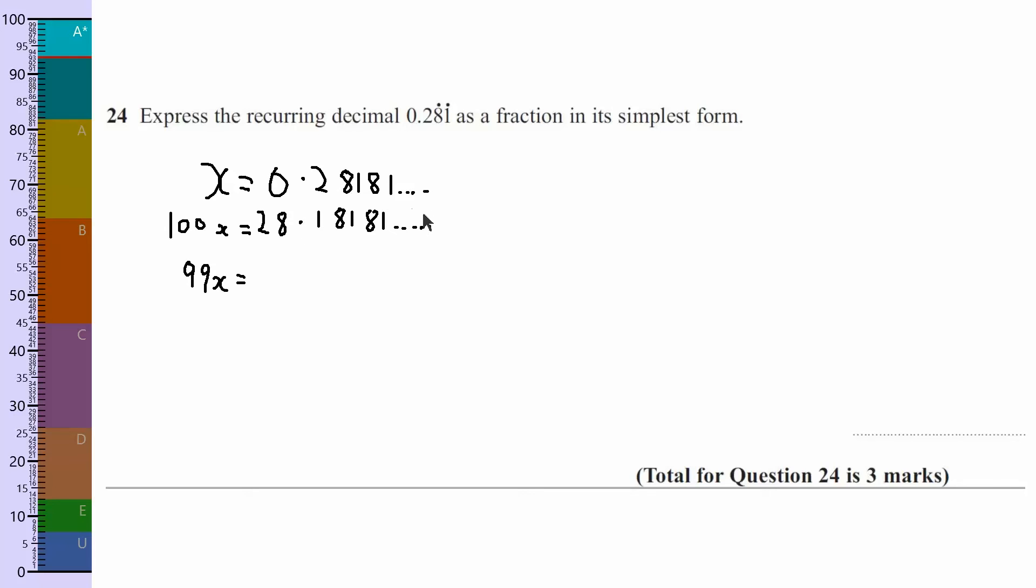So we're doing 28.1, and we're going to take away 0.2, so 28.1 take away 0.2 is 27.9,